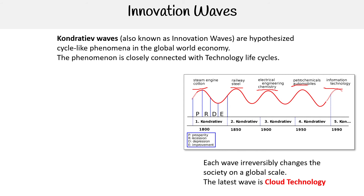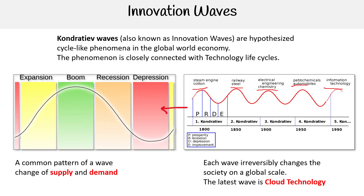Google is suggesting that the wave we're in right now includes cloud technology as one of the larger factors. When we look at one of these waves in greater detail, there is a common pattern that changes supply and demand — they say there's an expansion, a boom, a recession, and a depression. If you can detect that pattern, that's how you know something is going on.